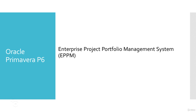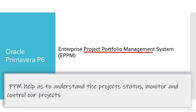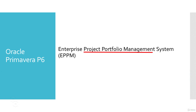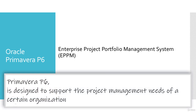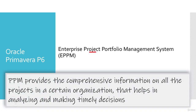Project Portfolio Management, or PPM, helps us to understand the project status, monitor and control our projects in the organization regardless of the size or number of projects. The portfolio normally consists of projects and programs, so portfolio management is the centralized management of these projects and programs. Oracle Primavera P6 is designed to support organizations that manage large numbers of projects at any point in time. PPM provides comprehensive information on all projects — from executive-level summaries to detailed plans — across all levels.